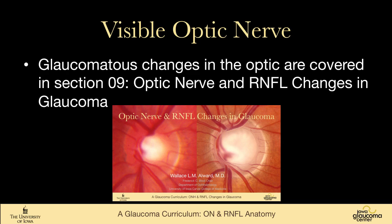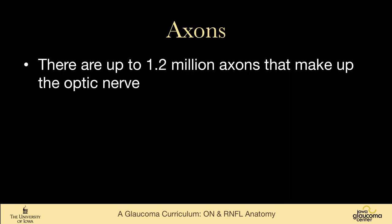In section nine, which discusses the changes that occur in optic nerve and retinal nerve fiber layer, we'll go over all the clinical manifestations of optic nerve damage.